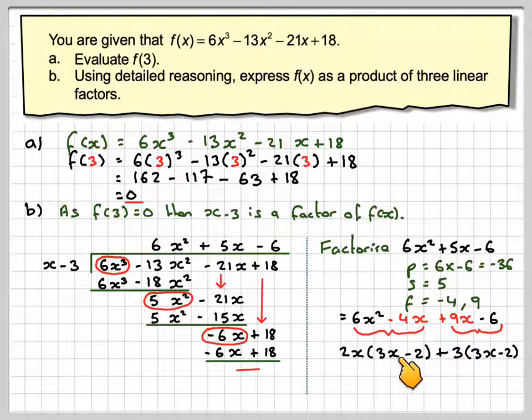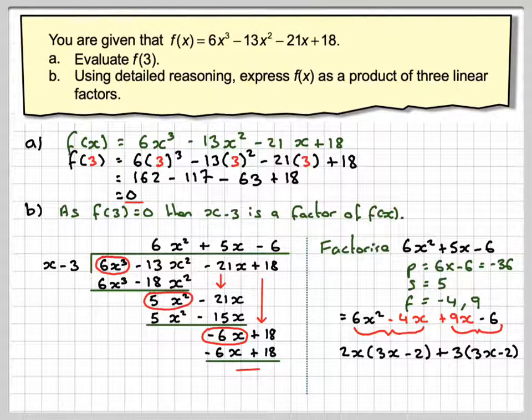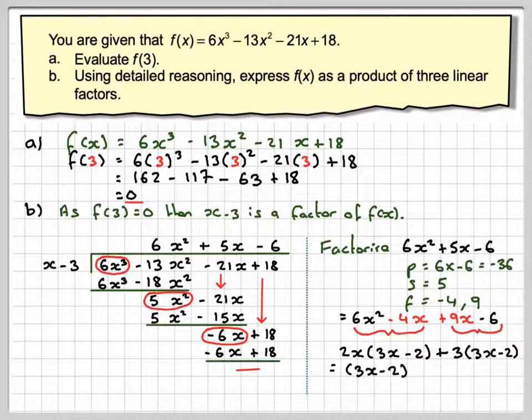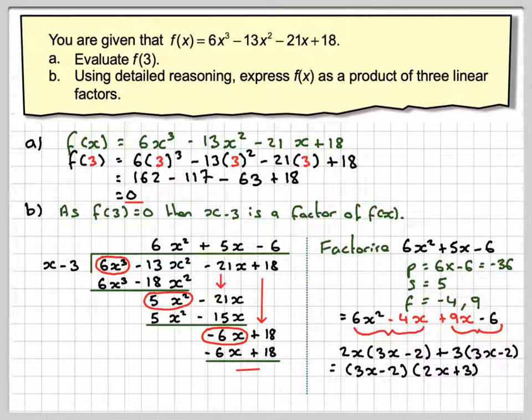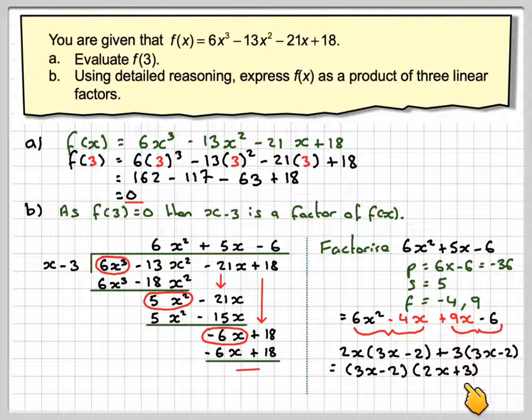So if you do the whole procedure correctly, this bracket and this bracket will be the same. Now that is now a common factor, so it can come out. And you're going to be left with 2x plus 3. So 6x squared plus 5x minus 6 becomes 3x minus 2 times 2x plus 3.